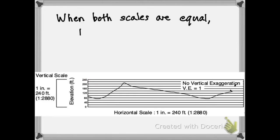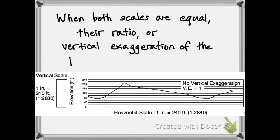When both the vertical and horizontal scales are equal, their ratio, which is the definition of vertical exaggeration of the topographic profile, is 1.